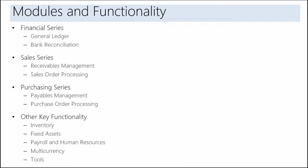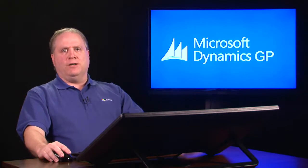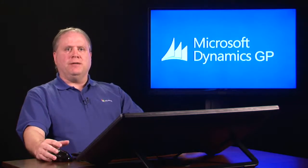Within Microsoft Dynamics GP, we have a number of what we call series. The most key areas are the financial series — which includes modules like general ledger and bank reconciliation — the sales series, which is receivables management and sales order processing, and the purchasing series, which is payables management and purchase order processing. General ledger is basically the final collecting point within Microsoft Dynamics GP — it collects transactions from all other modules. For example, if you enter a transaction in payables management, it flows down to general ledger and affects accounts like your sales account or your cash account.